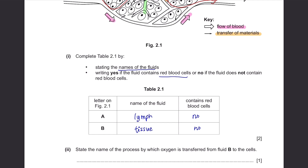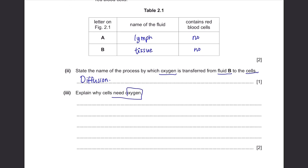State the name of the process by which oxygen is transferred from fluid B to the cells. Oxygen moves from tissues to cells by diffusion — they simply pass through the cell membranes. Explain why cells need oxygen: their main function is to carry out aerobic respiration. As a product, aerobic respiration releases energy, which is used everywhere in the body — for example, for active transport or digestion. As long as you write aerobic respiration for the release of energy, you'll get your two marks.